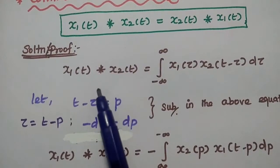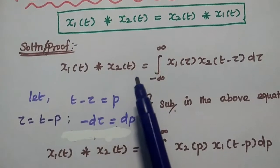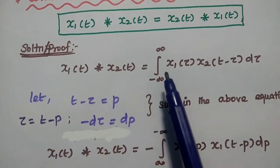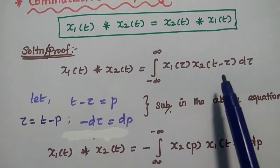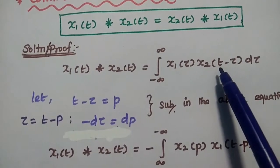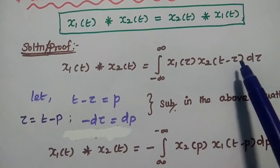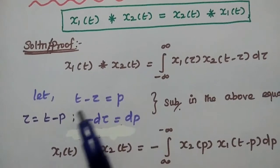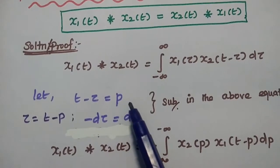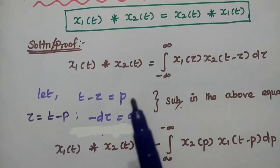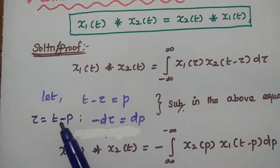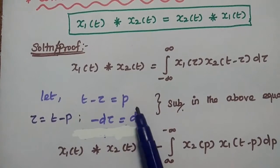Taking the left hand side first: X1 of t convolved with X2 of t is equal to the integration of X1 of τ times X2 of t minus τ dτ. In the next step, we consider t minus τ equal to P. Let's assume t minus τ is equal to P, where P is also the time variant. For further simplification, we assume this. From this, we can write τ is equal to t minus P.